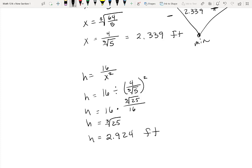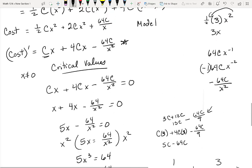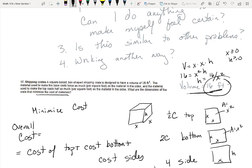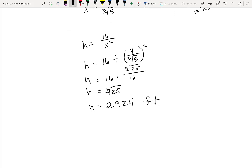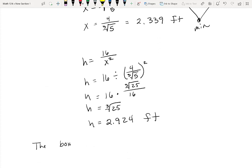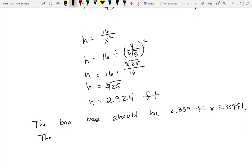And then depending, I'm going to do a quick 2.3 times 2.3 times 2.9. And that will get me sort of close, as I'm rounding, sort of close here so that it convinces me it meets that. So the box base should be 2.339 feet by 2.339 feet. The height should be 2.924 feet.